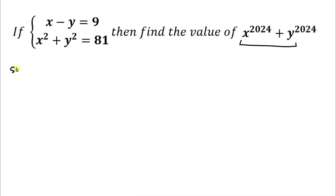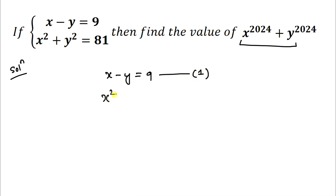Without any delay, let's start the solution. We have given x minus y equals 9 — let's take it as equation 1 — and the second equation is x squared plus y squared equals 81 — let's take it as equation 2.